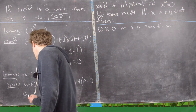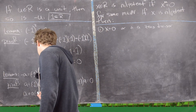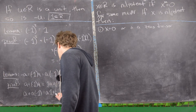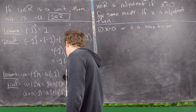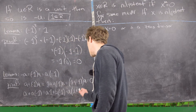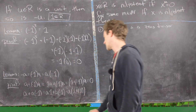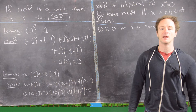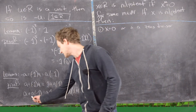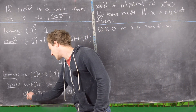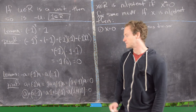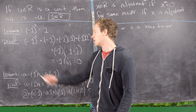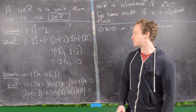For the second equality, we look at A plus A times negative 1, rewriting it as A times 1 plus A times negative 1. Distributing gives A times the quantity 1 plus negative 1, which is 0. So A times negative 1 and A are additive inverses of each other; the additive inverse of A is negative A, and by uniqueness these three expressions are the same.